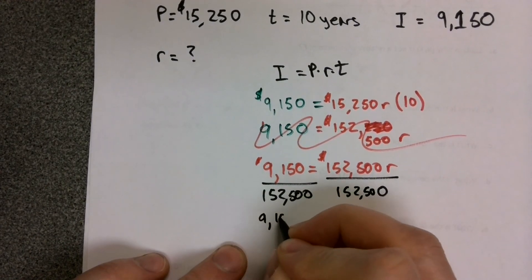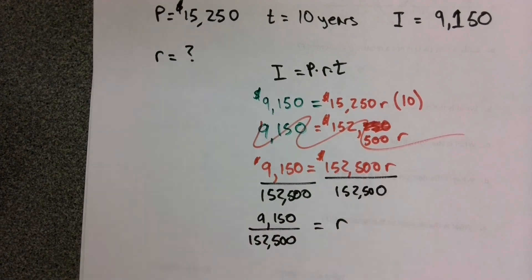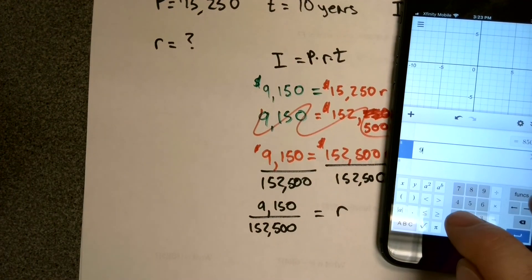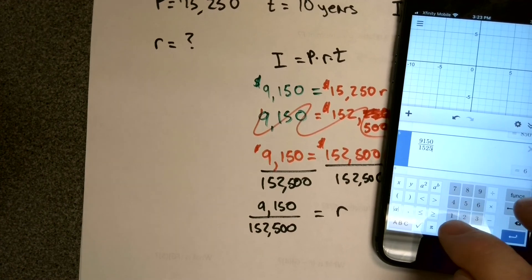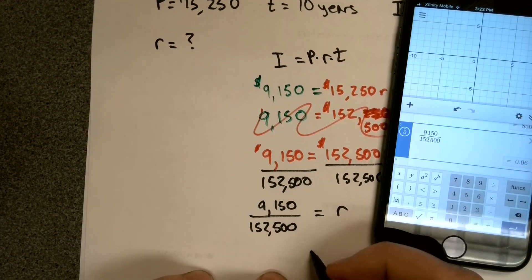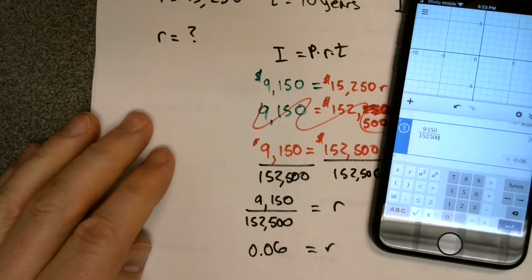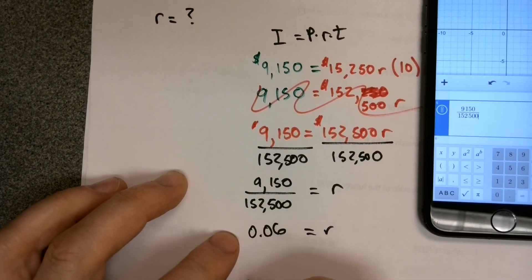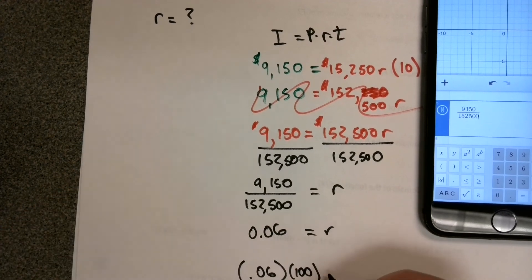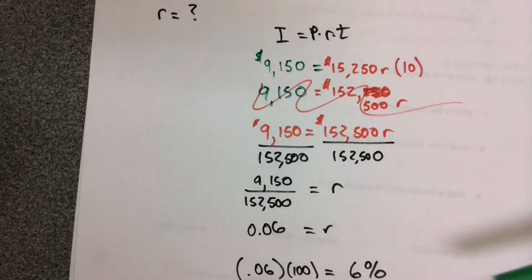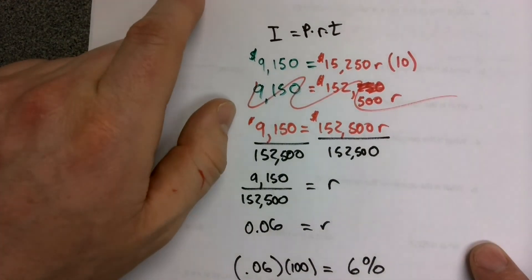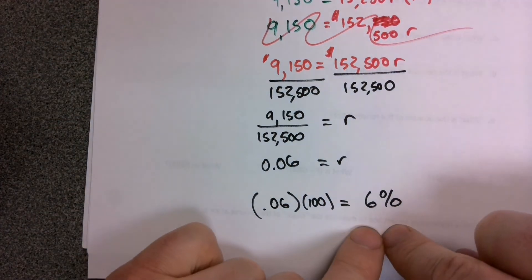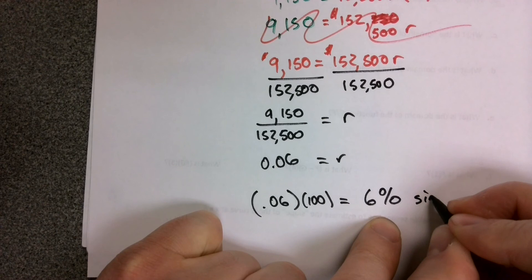In other words, our R equals $9,150 divided by $152,500, reaching for your handy Desmos app on your cell phone or your calculator. And we type in $9,150 divided by $152,500, and you get this decimal of 0.06. So what was the interest rate we earned? Remember, if we want to convert a decimal into a percent, we take that decimal and multiply it by 100. So this married couple, when they took their $15,250 investment, invested it for 10 years and earned $9,150, they were receiving a 6% simple interest return on their investment.